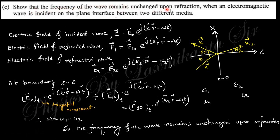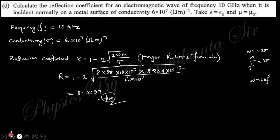Next question: show that the frequency of the wave remains unchanged upon refraction when the electromagnetic wave is incident on the plane interface between two different media. If this is two different media and the incident wave interfaces, some part is reflected and some part is refracted or transmitted. At the boundary, the tangential component will be continuous. Then you will obtain this relation, and the exponential part must be equal, so ω = ω₁ = ω₂. That is, the frequency remains unchanged during reflection or refraction.